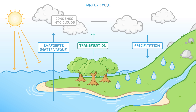So now that the water has fallen back to earth, it could seep into the soil, flow into rivers, or be taken up by plants. And then this whole cycle can repeat all over again.